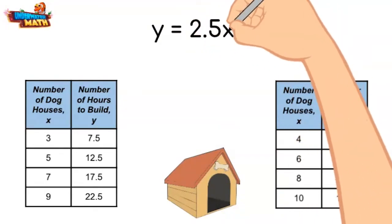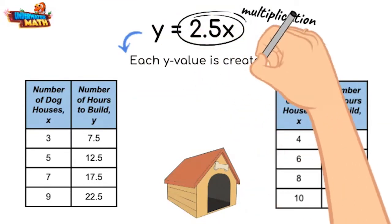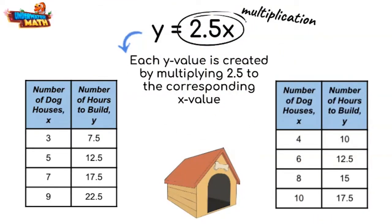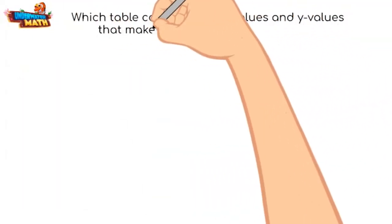When a number is next to a variable like this, it means we are multiplying. So this equation states that each y-value is created by multiplying 2.5 to the corresponding x-value. We can see that the first pair in each table works using this rule, but in the second table, multiplying x by 2.5 for the rest of the pairs doesn't work. The pairs in the first table are successful.